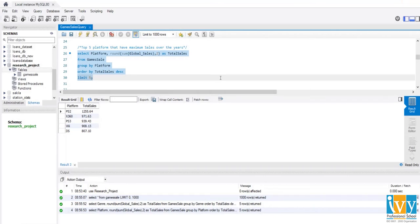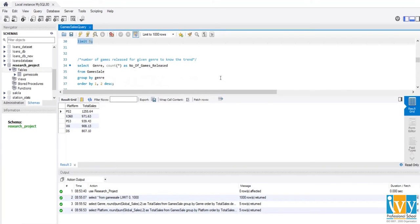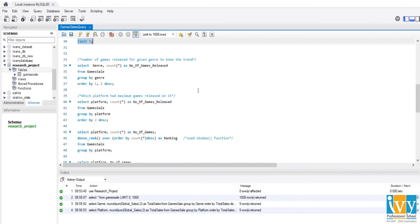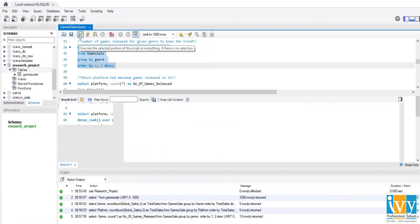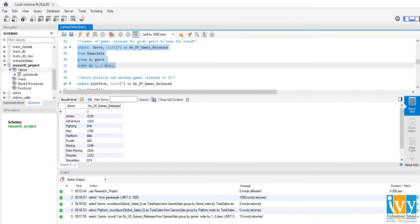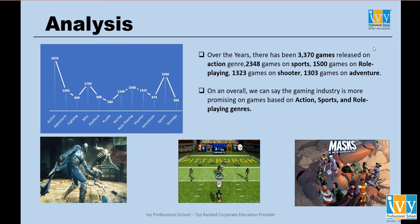Next, we want to know the number of games released for each genre to understand the trend. The analysis shows that over the years there have been 3,370 games released in the Action genre, 2,348 games in Sports, and 1,500 games in Role-Playing. Overall, we can say that the gaming industry is most active in games based on Action, Sports, and Role-Playing genres.